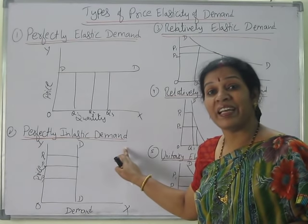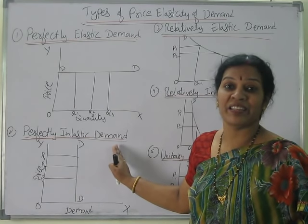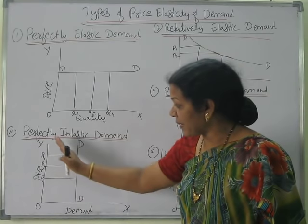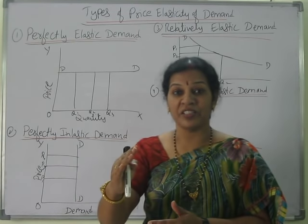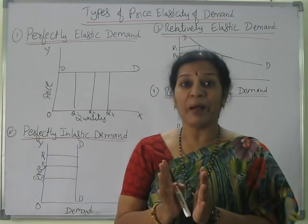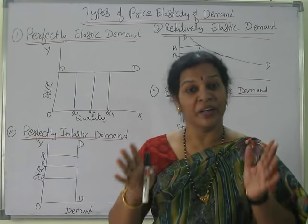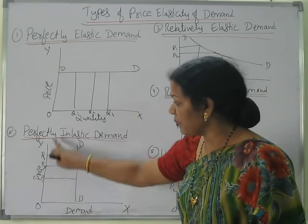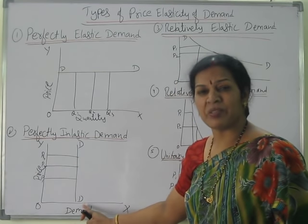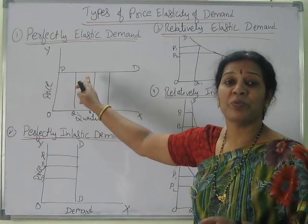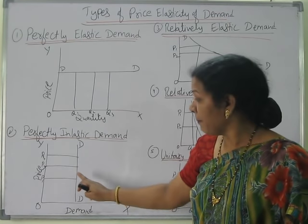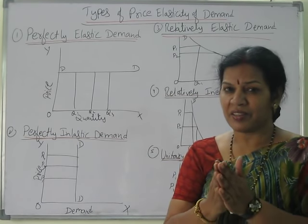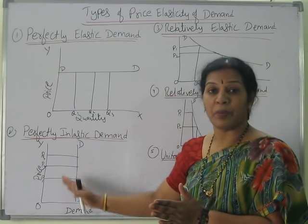Next is perfectly inelastic demand — quite the opposite. Here, the price is changing, increasing or decreasing, but demand stays the same; there is no change in the demand. Through the diagram, OX is demand (quantity) and OY is price. Demand is stable, but price is changing — P1, P2, P3 — though demand remains constant.